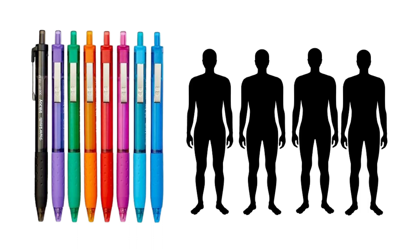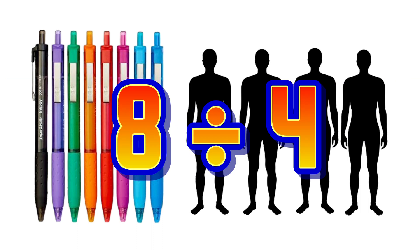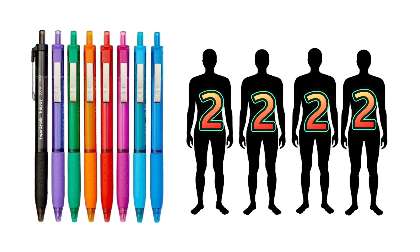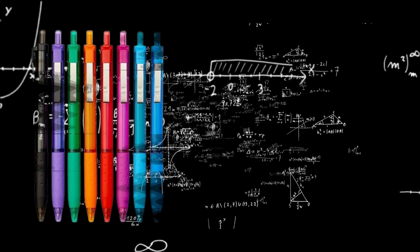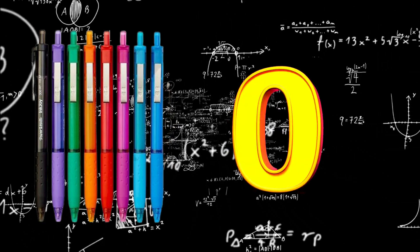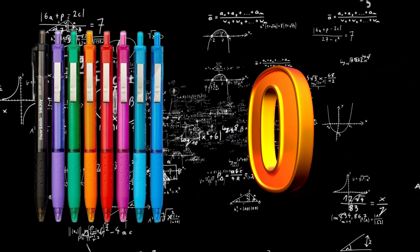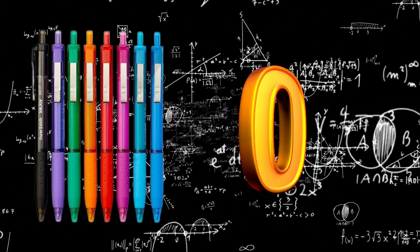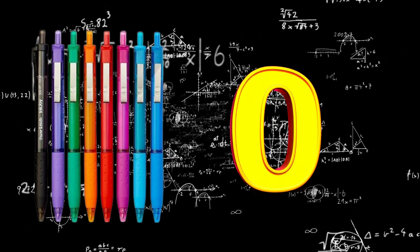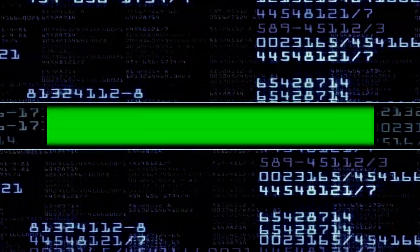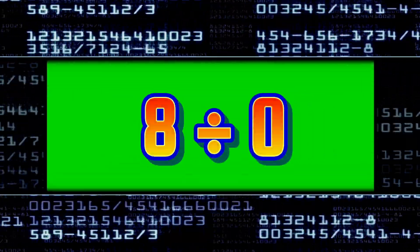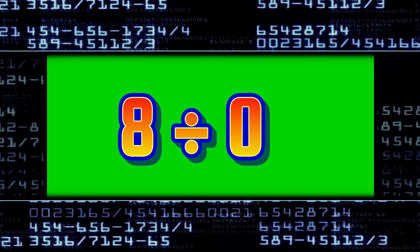If you have 8 pens and you need to distribute them among 4 people, then you simply do 8 divided by 4, which means each person gets 2 pens. But now in our scenario, if you have 8 pens and you need to distribute them among 0 people, what will happen? So let's see it in numbers — this means 8 divided by 0. So, what do you get?